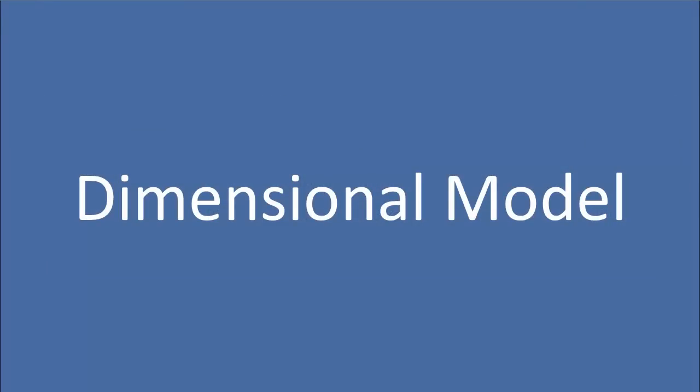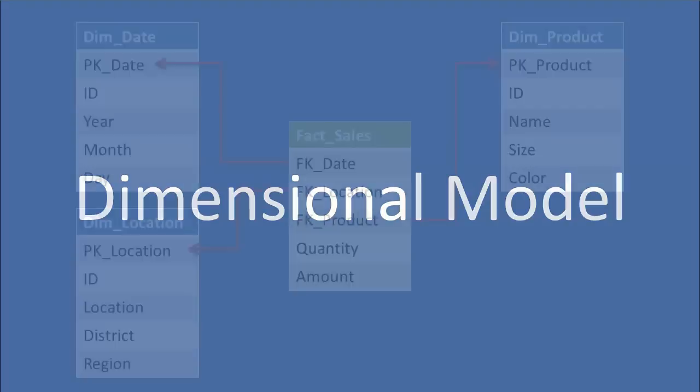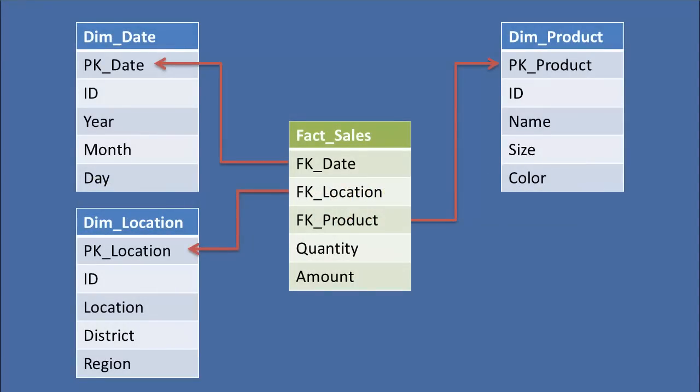Now that we know a little bit about a fact table and a dimension, we can take our first look at a dimensional model. In the center we have our fact table and around the outside we have our dimensions — this is commonly called a star schema. It's a very simple one, but it is a star schema. You can see how we have foreign keys in our fact table pointing to the date dimension's primary key, foreign key location pointing to the primary key in the location dimension, and foreign key product pointing to the primary key in the product dimension.